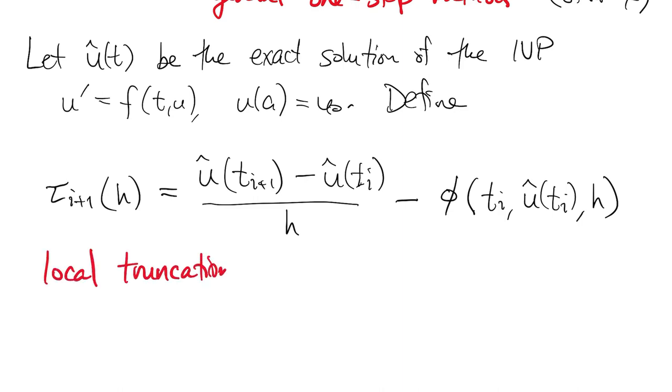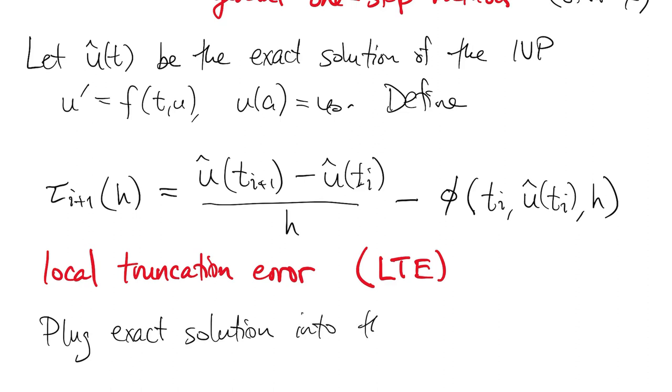This is called the local truncation error, or LTE. The way we use this is, once we've plugged in the unknown exact solution, we take a Taylor expansion in powers of h, and then we apply the fact that the solution satisfies the ODE.